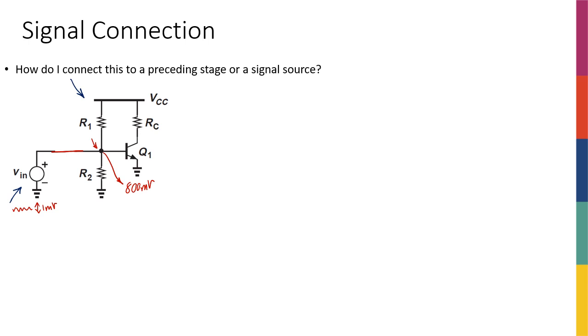I want to have this one millivolt sinusoidal on top of that DC, but what really happens is that I have a voltage source directly connected to this node. One thing I know about voltage sources is that they enforce the voltage at that node to be the voltage that is posted on that voltage source. So if I have a one millivolt sinusoidal, then the base voltage is going to be one millivolt sinusoidal.